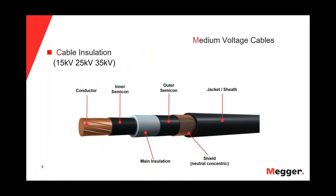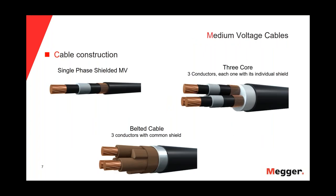Let's start with the basics for medium voltage cables. We are seeing in the slide the classic single-phase cable, which has a center conductor that could be of copper or aluminum material. Then we have the inner semi-con layer, the main insulation of the cable, and the outer semi-con layer. Next, we have the neutral concentric or shield of the cable, and finally the jacket or sheath of the cable. Regarding cable constructions, besides the single-phase shielded medium voltage cable, we can have the three-core cable in which we have three conductors each with an individual shield, and also the belted cable, in which we have three conductors but a common shield.